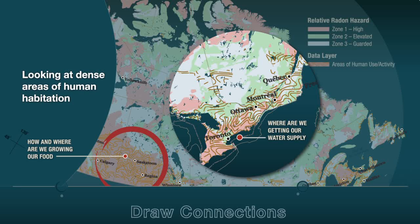What implications might this have for how and where we grow our food, or obtain our water supply? Another consideration is uranium contamination of common building materials, such as cement aggregate and granite, which can be a source of radon brought into our homes from other regions of the country.